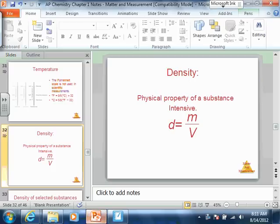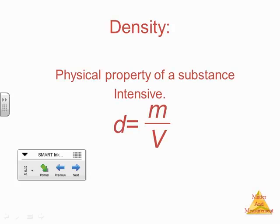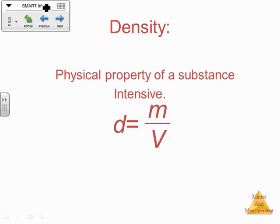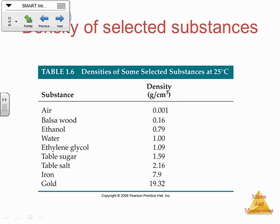Let's talk about density now. Density is a physical property of a substance, because you don't have to change the substance itself to observe this property. And it's intensive, which means it doesn't matter how much of something you have — its density is always going to be the same. The formula for density is mass divided by volume. That table below shows the density of some common substances; air is obviously not very dense, while gold is the highest density on the list.